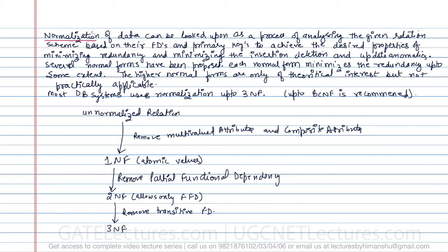Normalization of data can be looked at as a process of analyzing the given relation scheme based on their functional dependencies and the primary keys, to achieve desired properties of minimizing redundancy. When we do normalization, from a given relation we'll have a lot of redundant values or redundant tuples, so in the process of normalization we try to remove all those redundant values or tuples so that the complete relation will be in a normal form where the minimum number of repeated values are there.